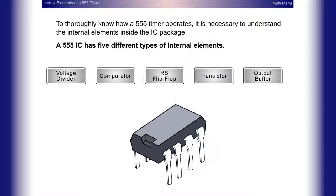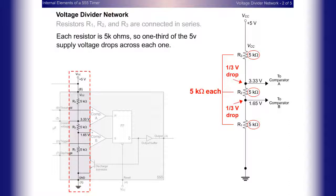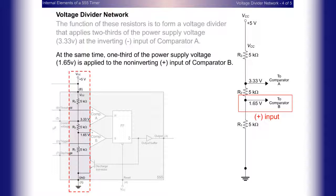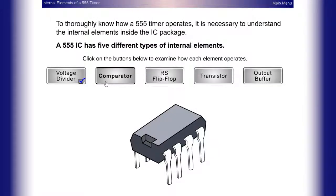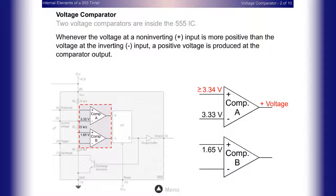Voltage divider network: Resistors R1, R2, and R3 are connected in series. Each resistor is 5k ohms, so one-third of the five-volt supply voltage drops across each one. The function of these resistors is to form a voltage divider that applies two-thirds of the power supply voltage at the inverting negative input of comparator A, and one-third of the power supply voltage at the non-inverting positive input of comparator B.